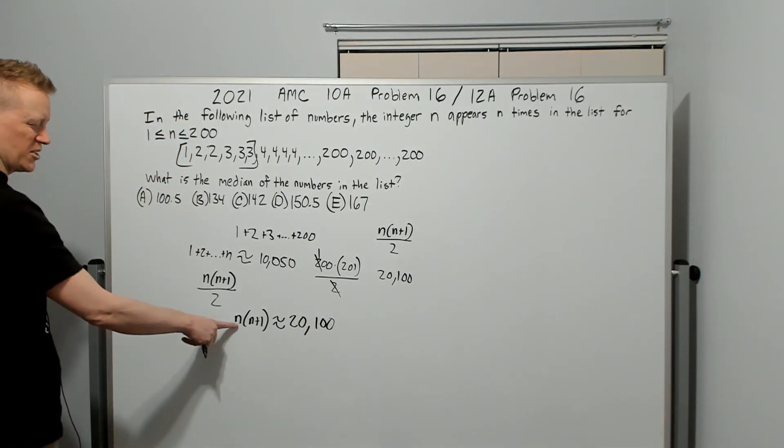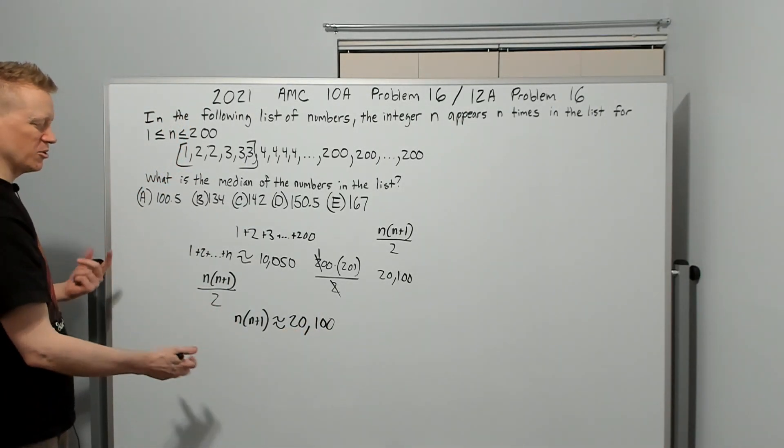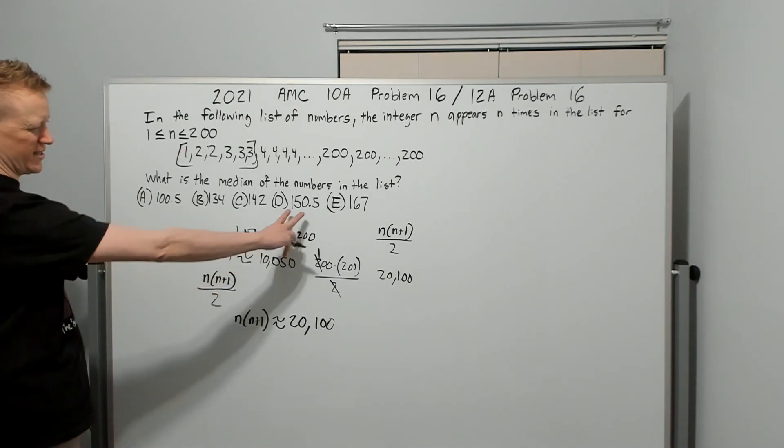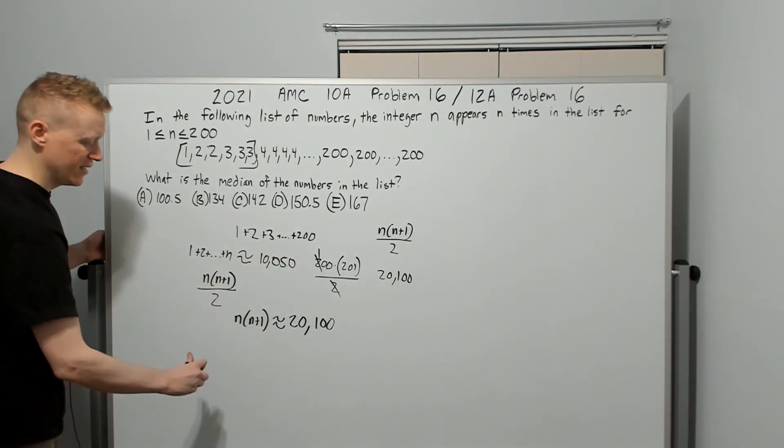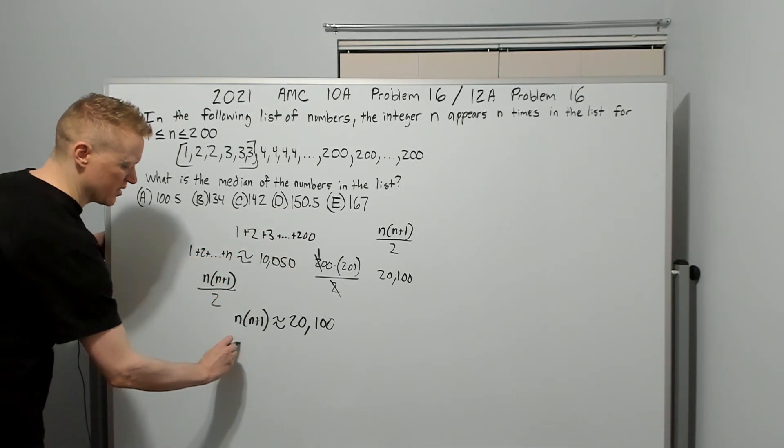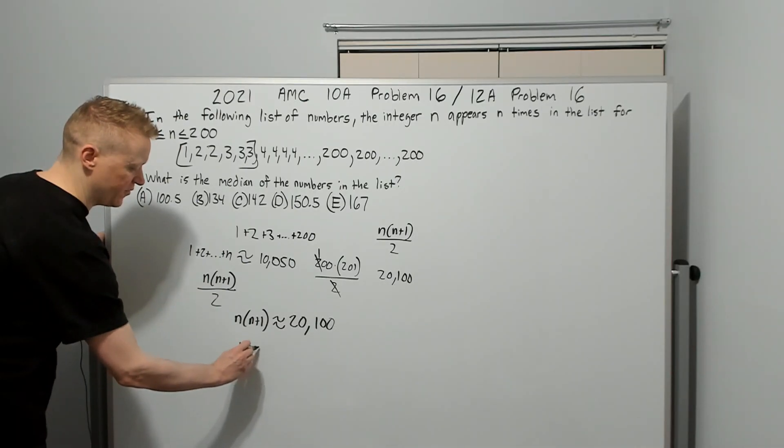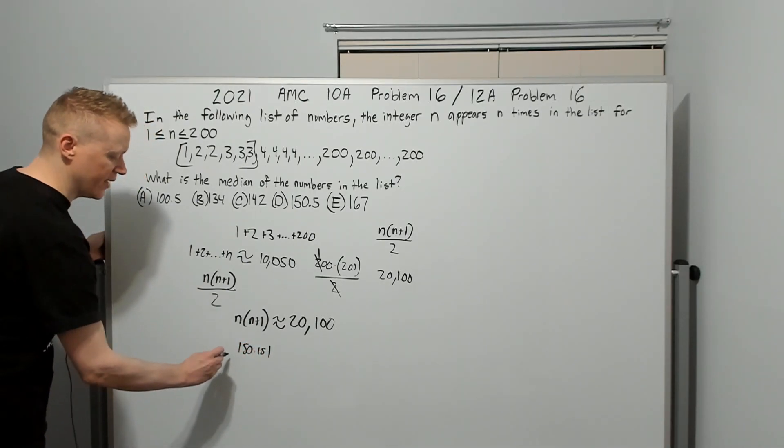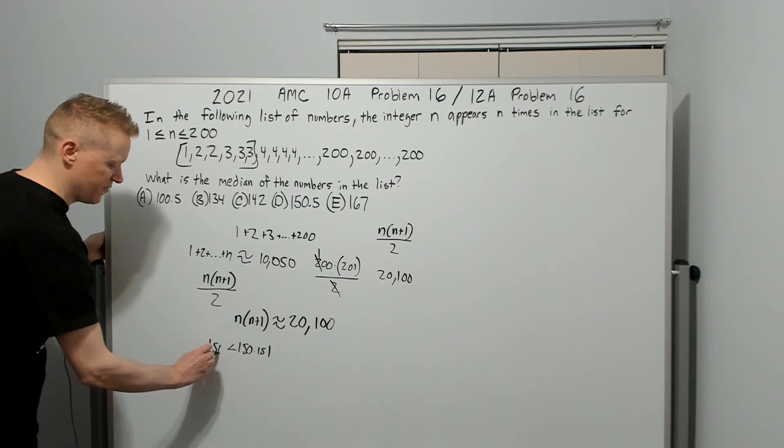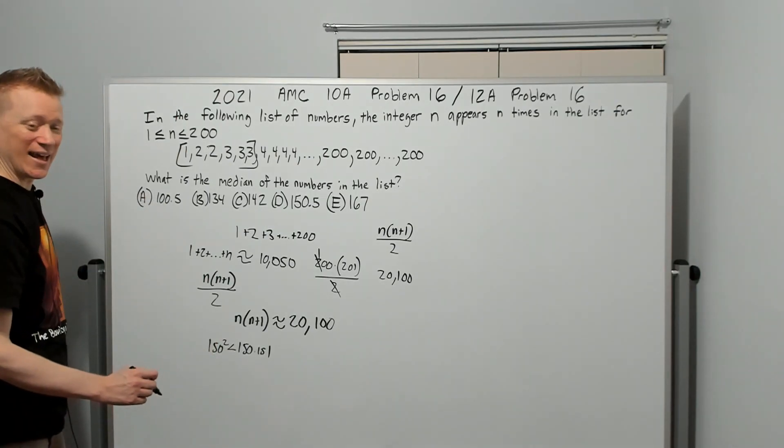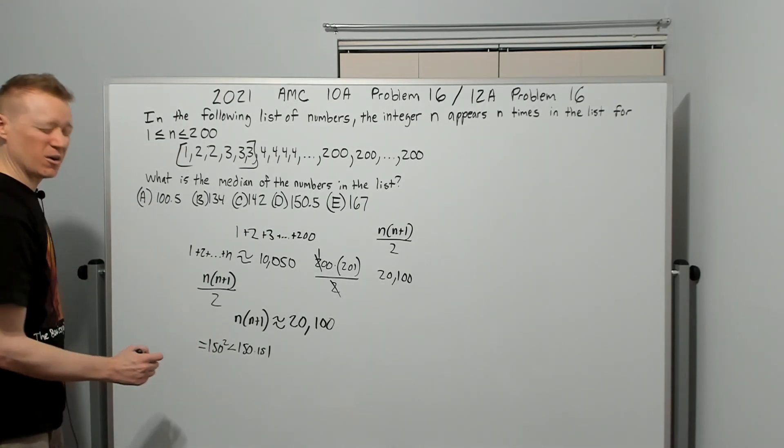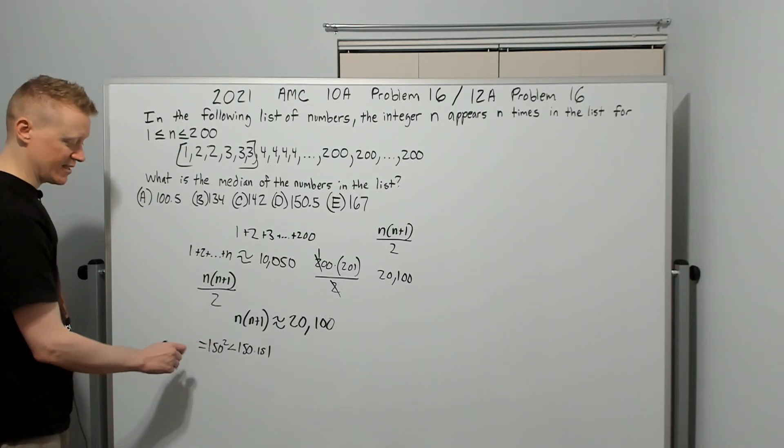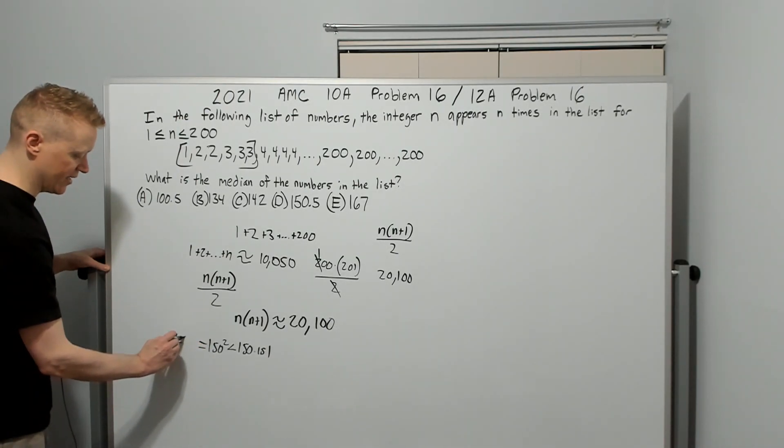So the question is, what would n be that gets us close to that? Let's try something like 150. n times (n+1) is going to be 150 times 151. I know that 150 squared is less than that, but 150 squared is much easier to calculate. So 15 times 15 is 225, toss two zeros on—